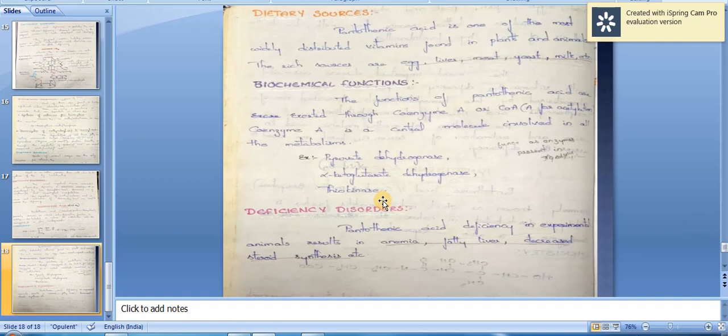More than 70 enzymes that depend on coenzyme A are known, examples such as pyruvate dehydrogenase, alpha-ketoglutarate dehydrogenase, and thiokinase.